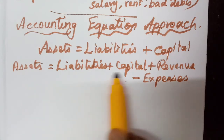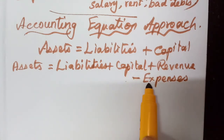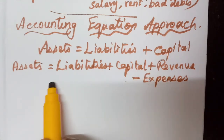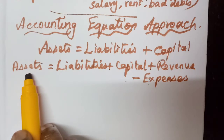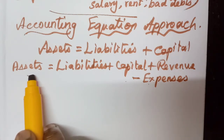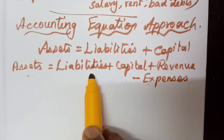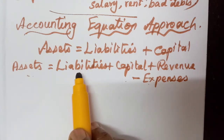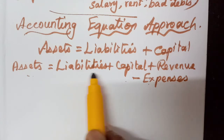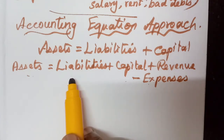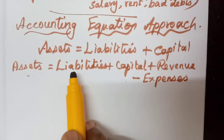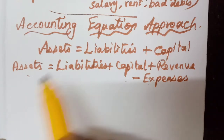So totally five accounts: asset account, liability account, capital account, revenue account, and expense account. Assets are the property owned by the business — land, building, everything. Liabilities are what the business owes to others: creditors, bills payable, bank overdraft — all these the business has to pay to others.